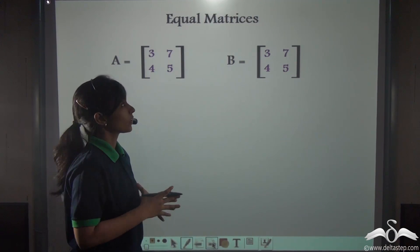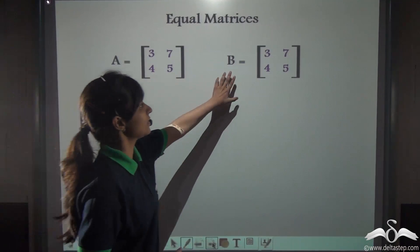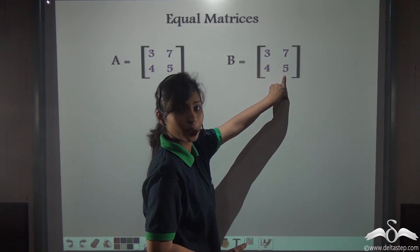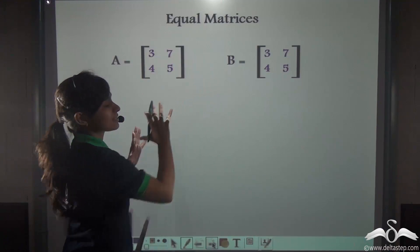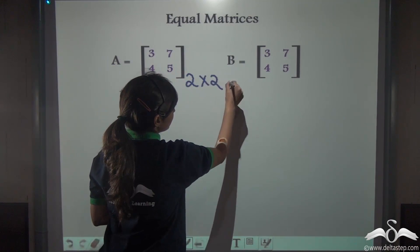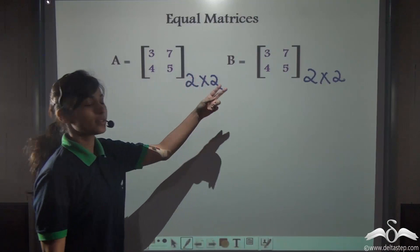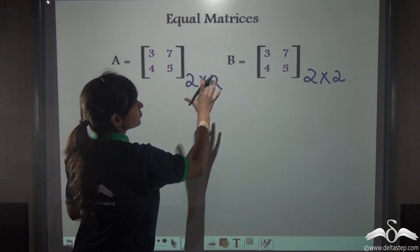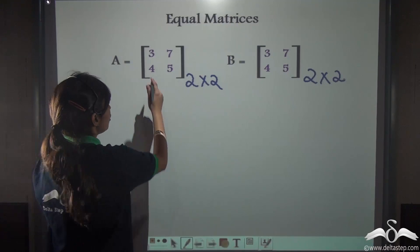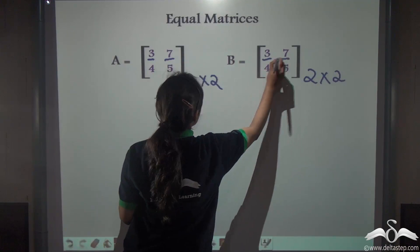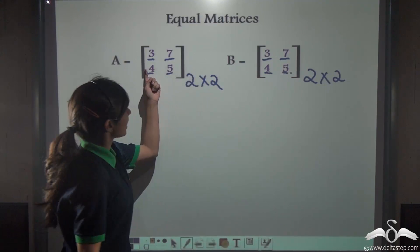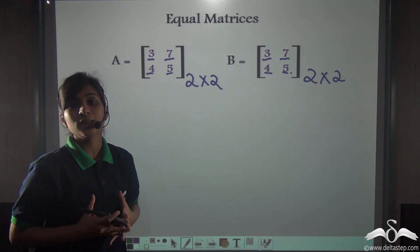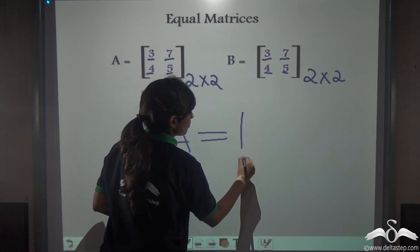There are many types of matrices. Look at matrix A and matrix B. A has elements 3, 7, 4, 5 and B has elements 3, 7, 4, 5. Both have the same number of rows and columns — both are of order 2 by 2, so they have the same number of elements. Both have the same entries at exactly the same places. So A is identical to B, meaning matrix A equals matrix B — these are equal matrices.